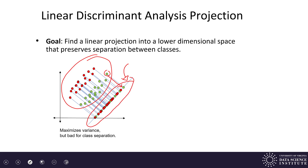This first projection takes our two classes and projects them in a direction that may maximize variance of the total data set, but it squashes the classes on top of each other so we don't see any class separation.